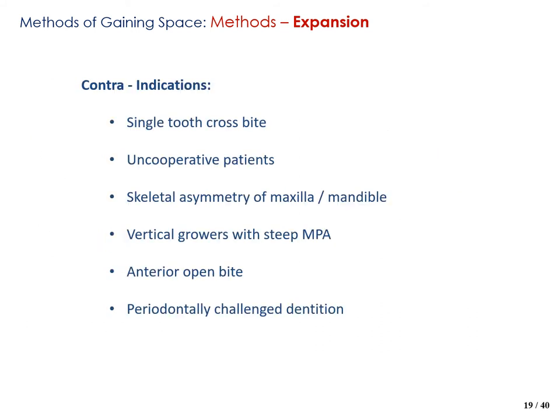Contraindications to RME include: single tooth crossbite, uncooperative patients, skeletal asymmetry of the maxilla or mandible, vertical growers with steep mandibular plane angle, anterior open bite, and periodontally challenged dentition — in these cases expansion is contraindicated.